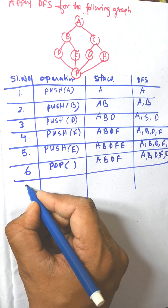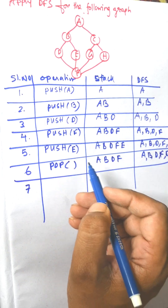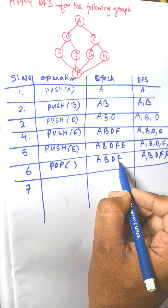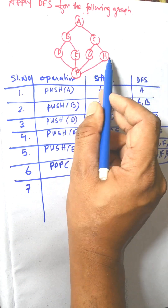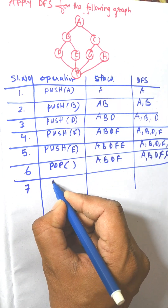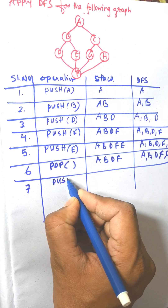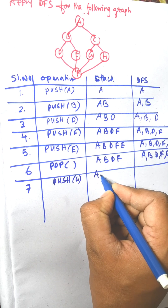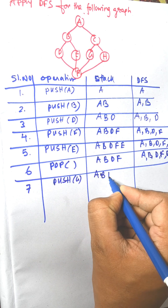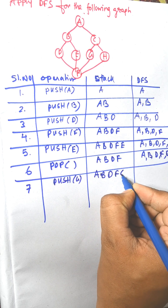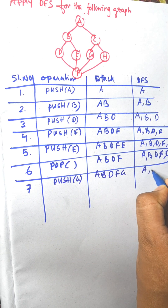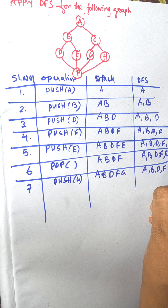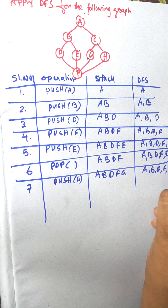Now serial number 7. From F we can visit either G or H, so push G. The stack is now A, B, D, F, G and the visited list is A, B, D, F, E, G.